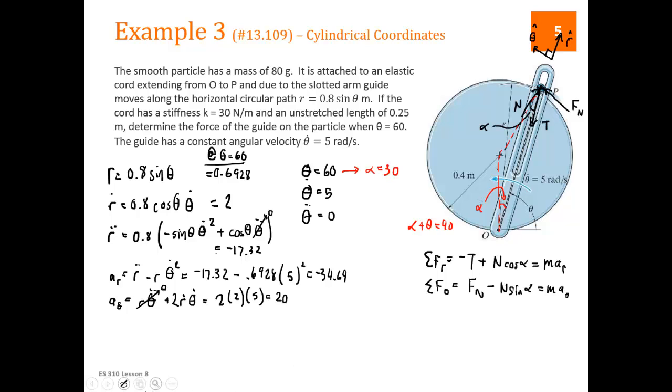We've got alpha. Now, let's talk about T. T is tension in an elastic cord, it's a spring. We're given a spring constant. T is equal to K times the stretch in the spring. We're told that the rope is unstretched at 0.25. Currently, it has a length of R. So T is going to be 30, which is the K, times R minus 0.25. The current length minus the original length. That's going to equal 30 times 0.6928 minus 0.25. So now we are ready to plug things into these two equations.